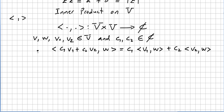In an inner product, these are some of the properties. The inner product of c1 v1 plus c2 v2 and w equals c1 times the inner product of v1 and w, plus c2 times the inner product of v2 and w.